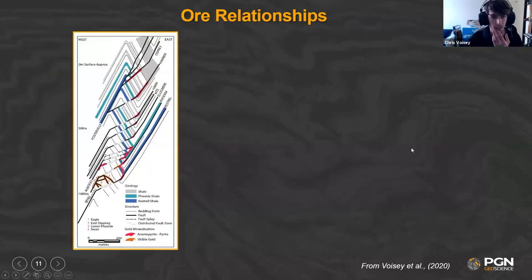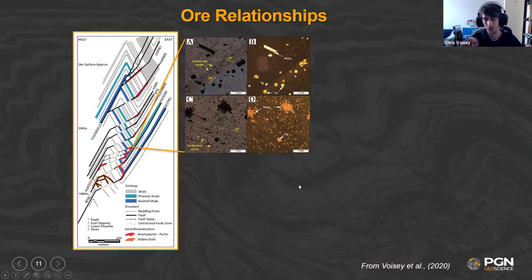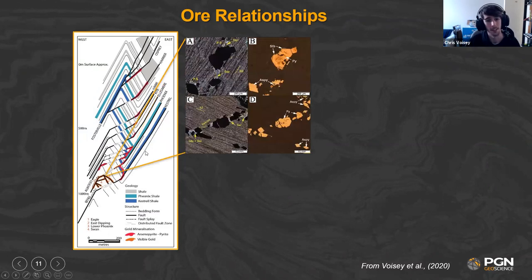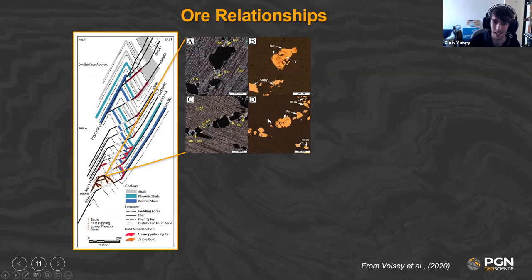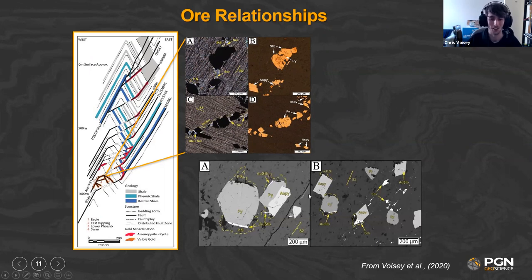Looking at ore relationships: at the shallower refractory-only levels, we see pyrite and arsenopyrite in the wall rock with carbonate spotting, hosted in more porous sandy layers filling pore space. A bit deeper, in the visible gold range with refractory ore, there's more sericite alteration, some quartz-sericite veinlets, and in pressure shadows we have aurostibite — basically a gold-stibnite mineral with gold in the chemical formula — as well as some stibnite filling in those pressure shadows.